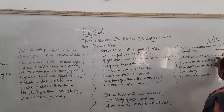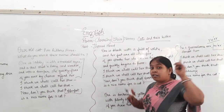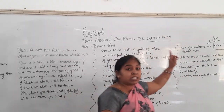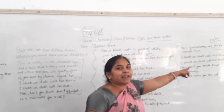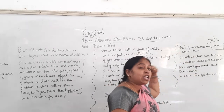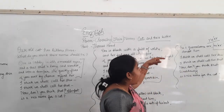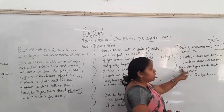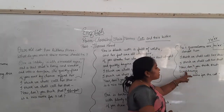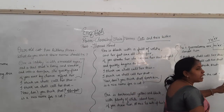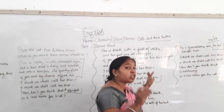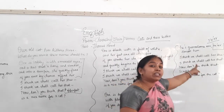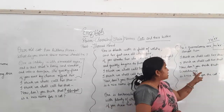Again the poet has done the repetition of the lines 'I think we shall call her this, I think we shall call her that' because he is focusing on the name of the kitten. He has repeated these lines again and again in all the stanzas. Don't you think that Scratchaway is a nice name for this cat?